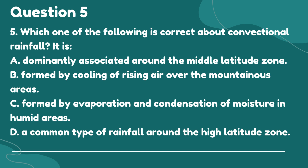Question 5. Which one of the following is correct about convectional rainfall? A. Dominantly associated around the middle latitude zone. B. Formed by cooling of rising air over mountainous areas. C. Formed by evaporation and condensation of moisture in humid areas. D. A common type of rainfall around the high latitude zone.